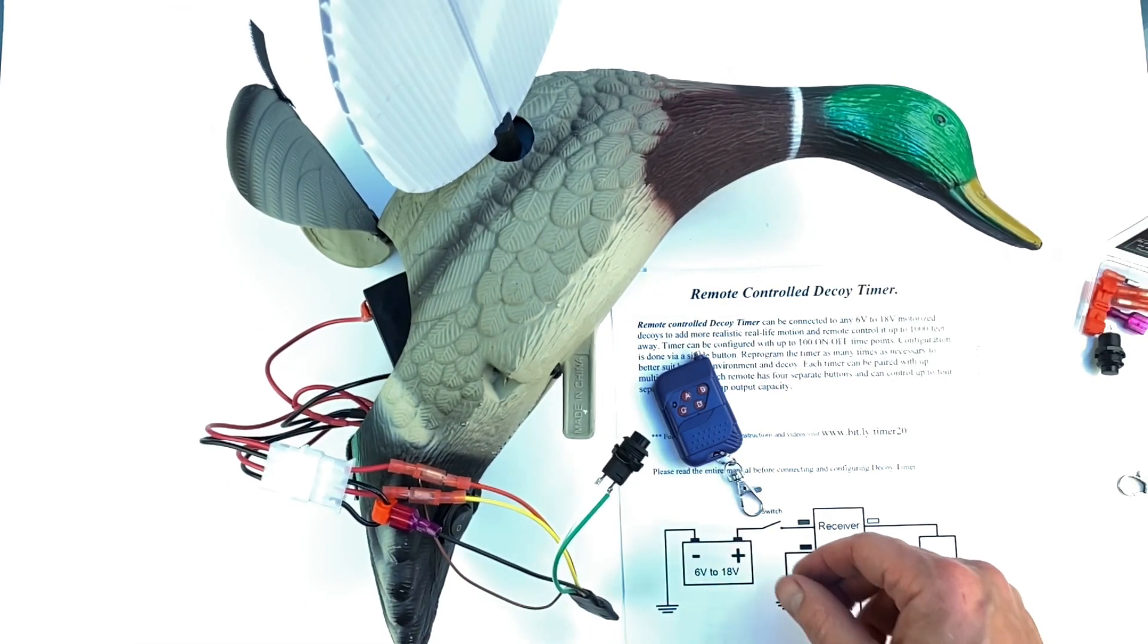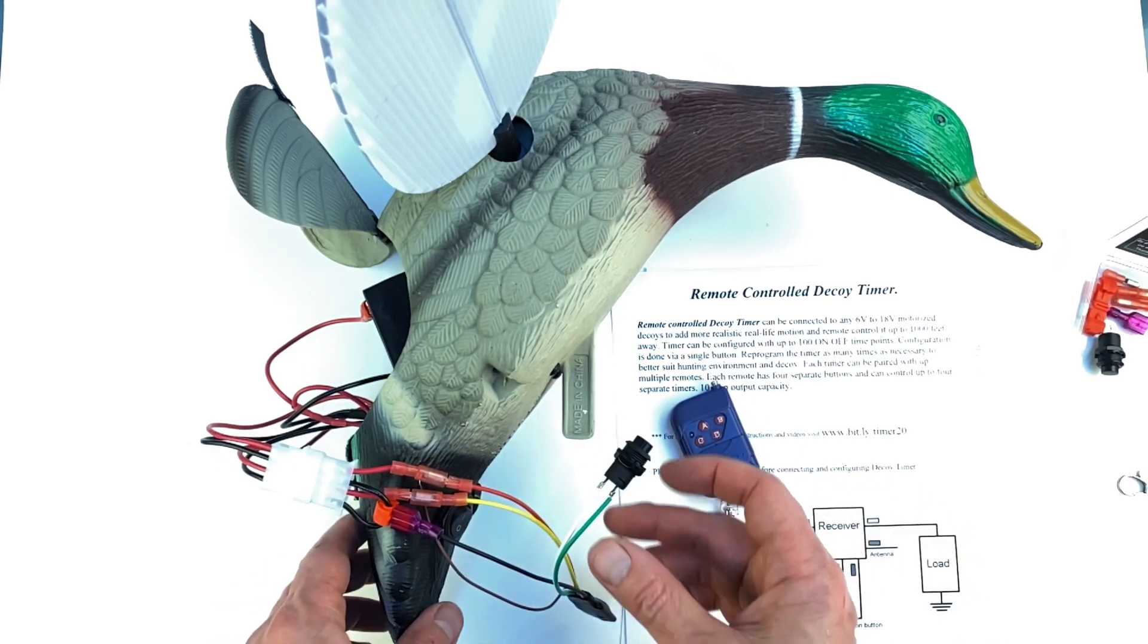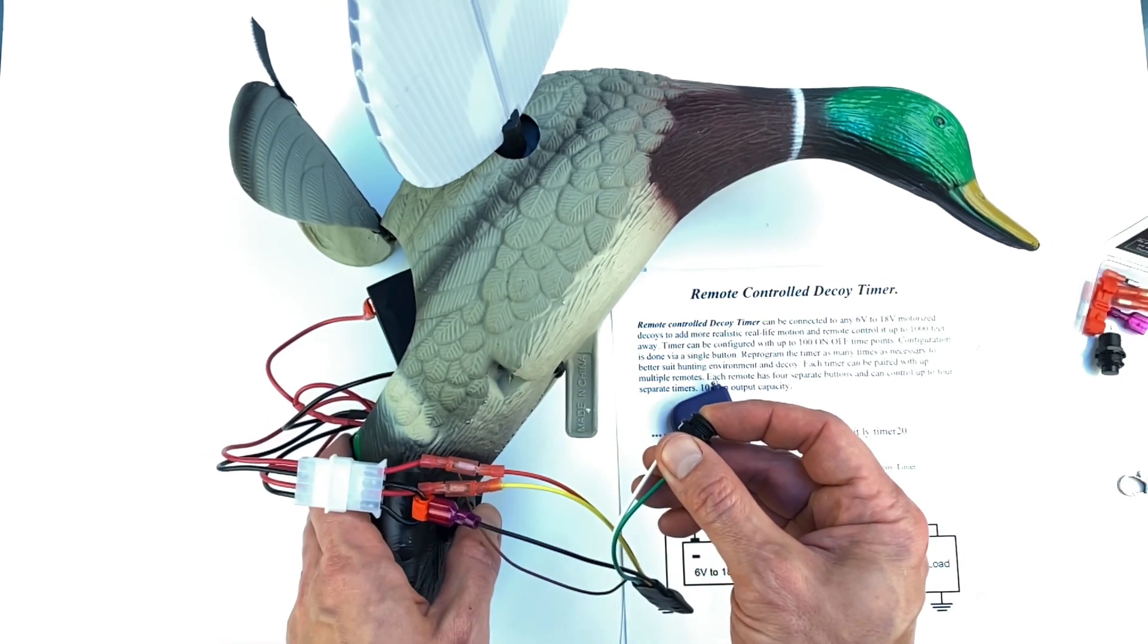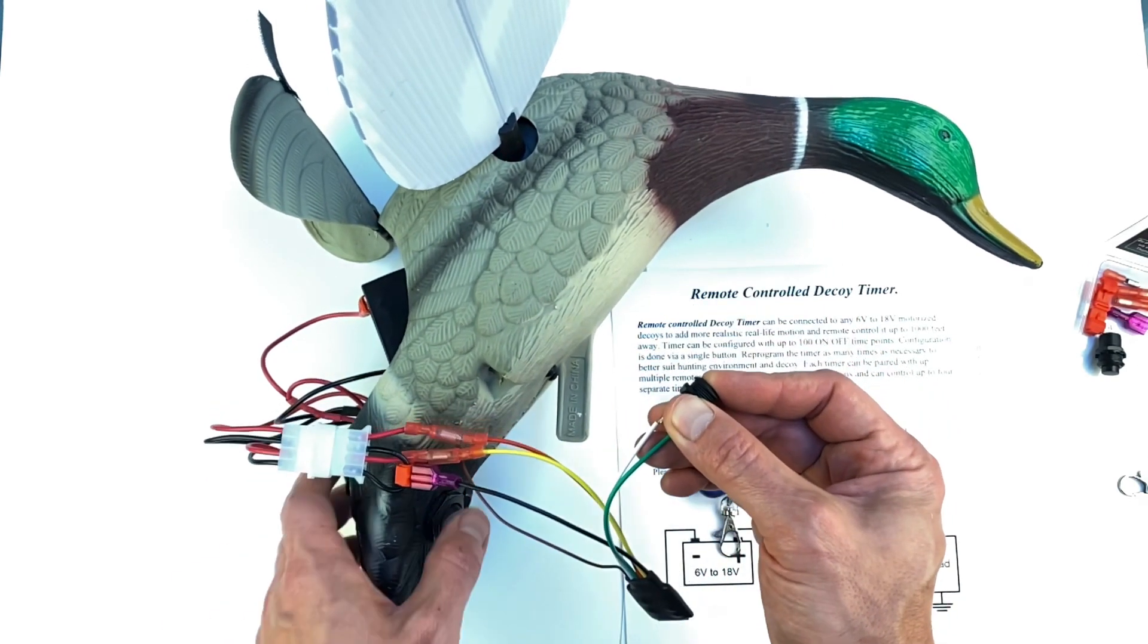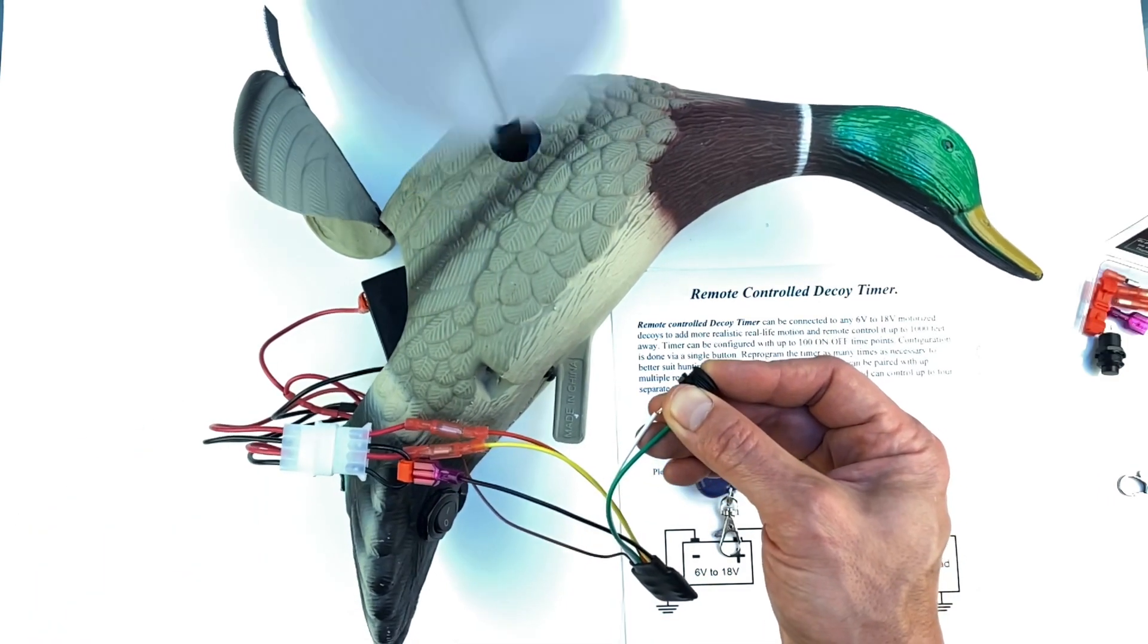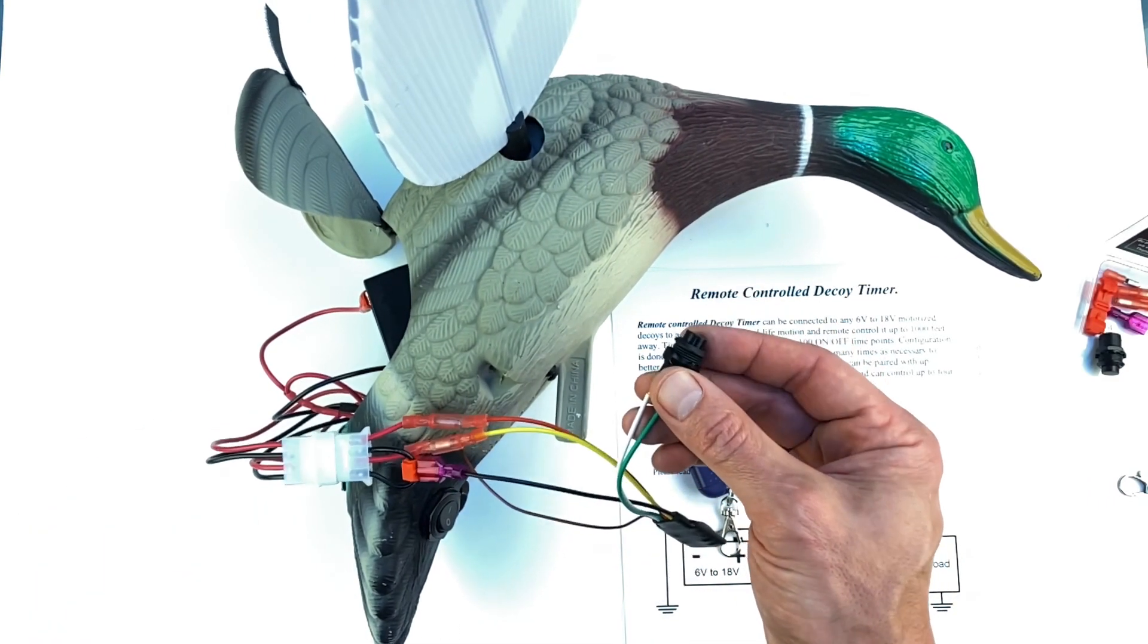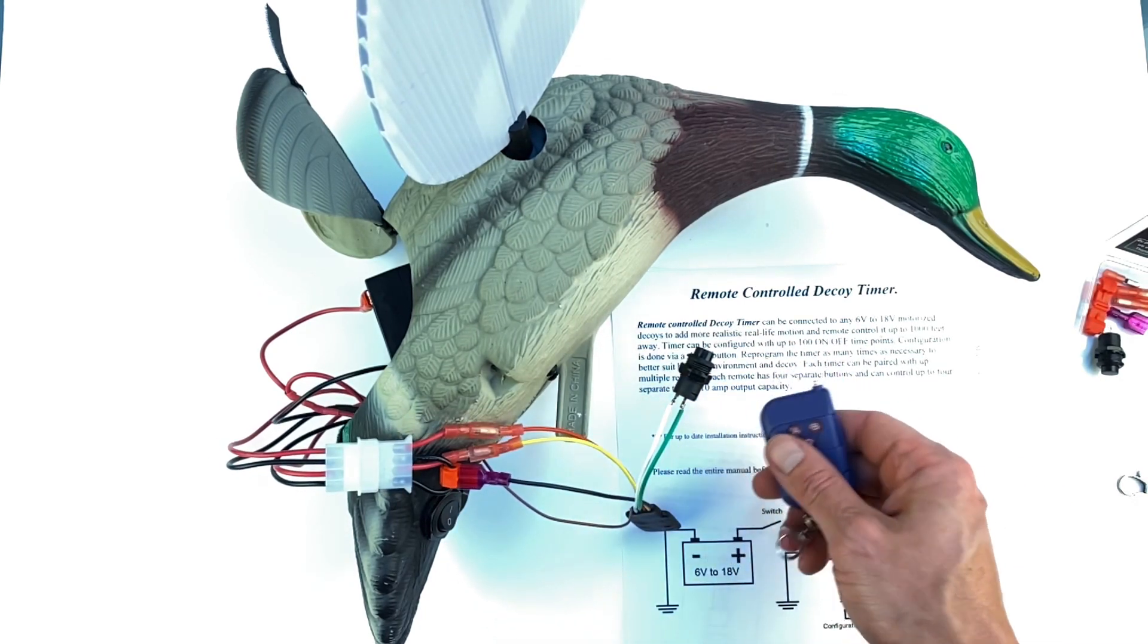Now we need to pair the remote with the receiver. To do that we're going to push the button and turn the power on. We will see the wing move once and then the second time, and after the second time we're going to release the button. That puts the timer in pairing mode.